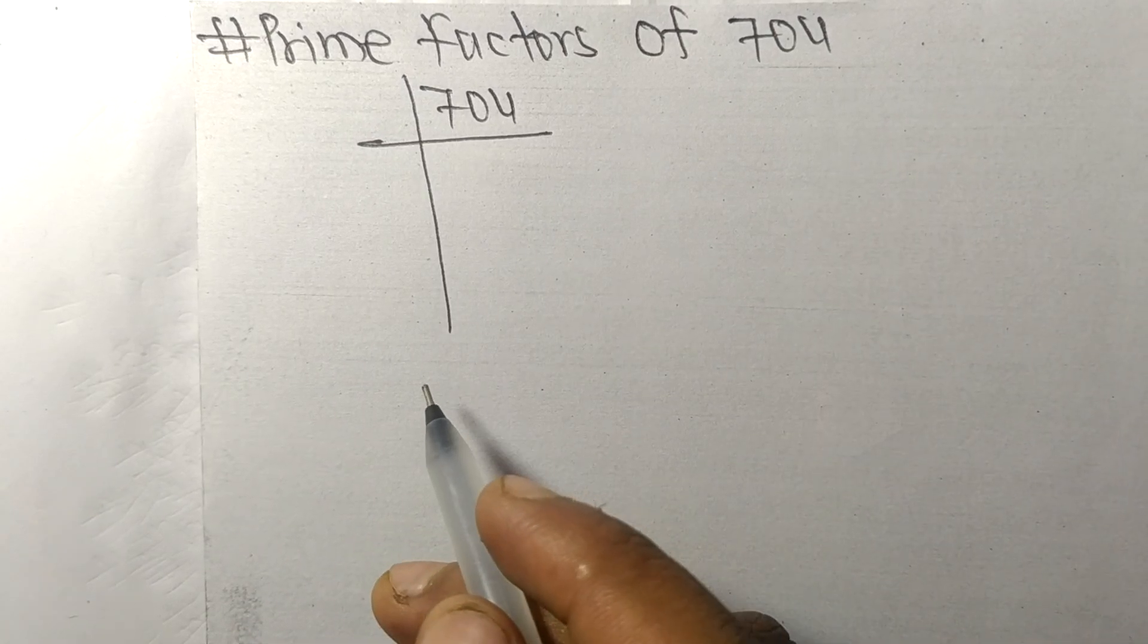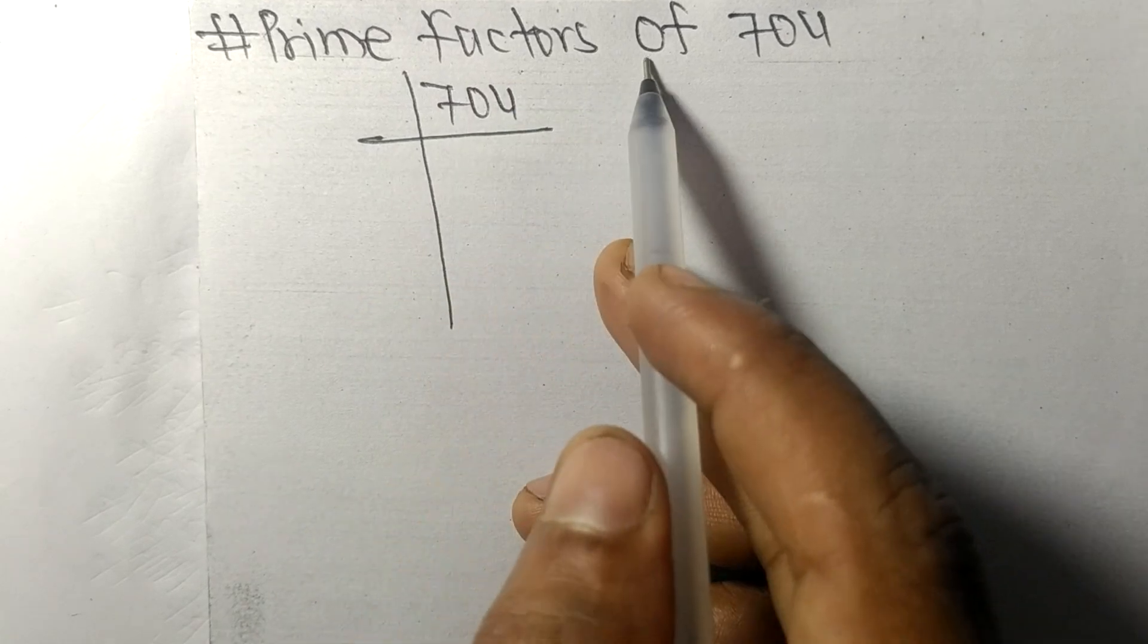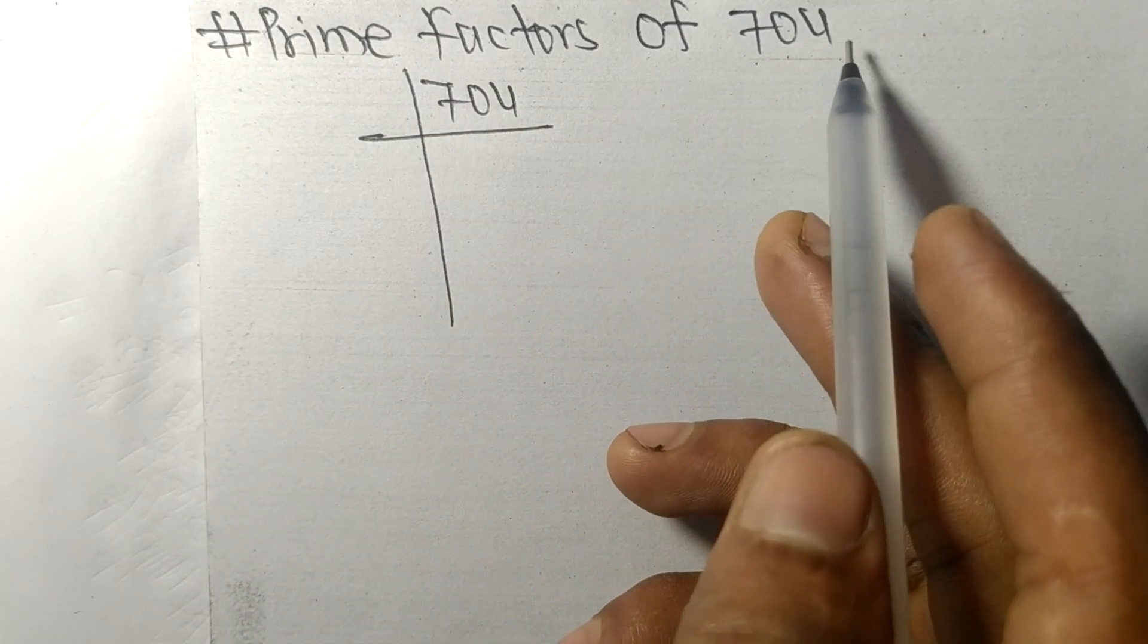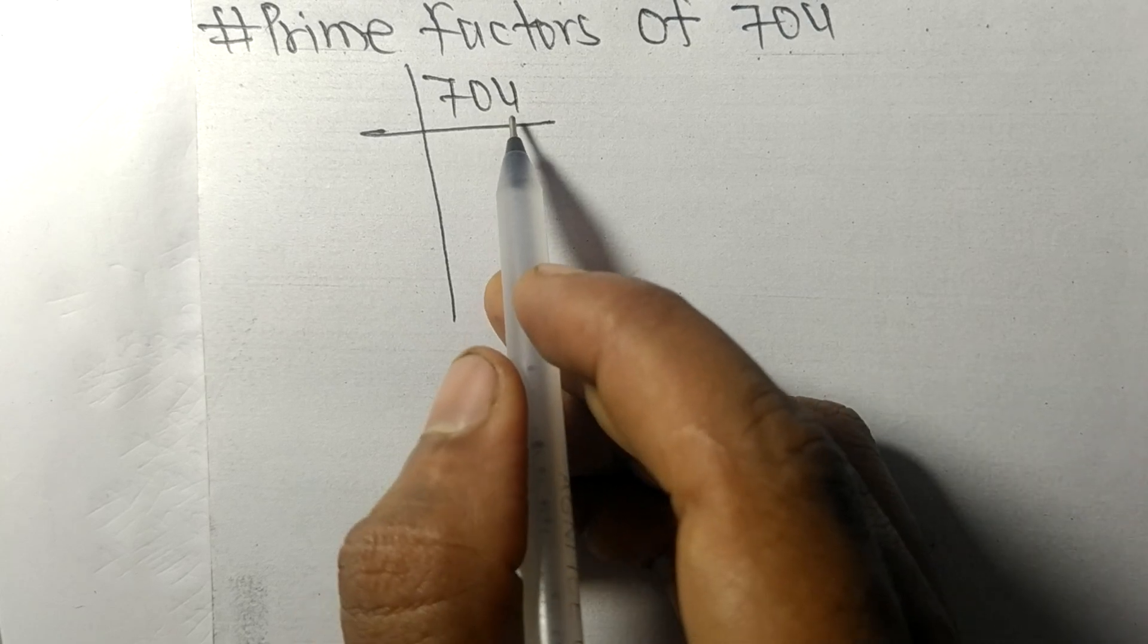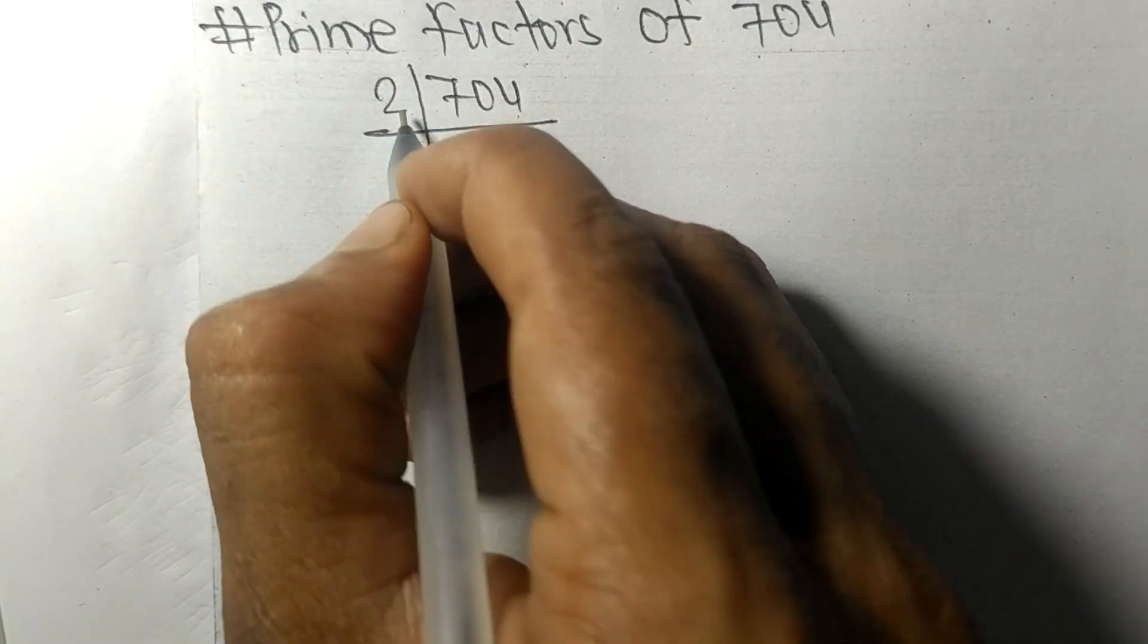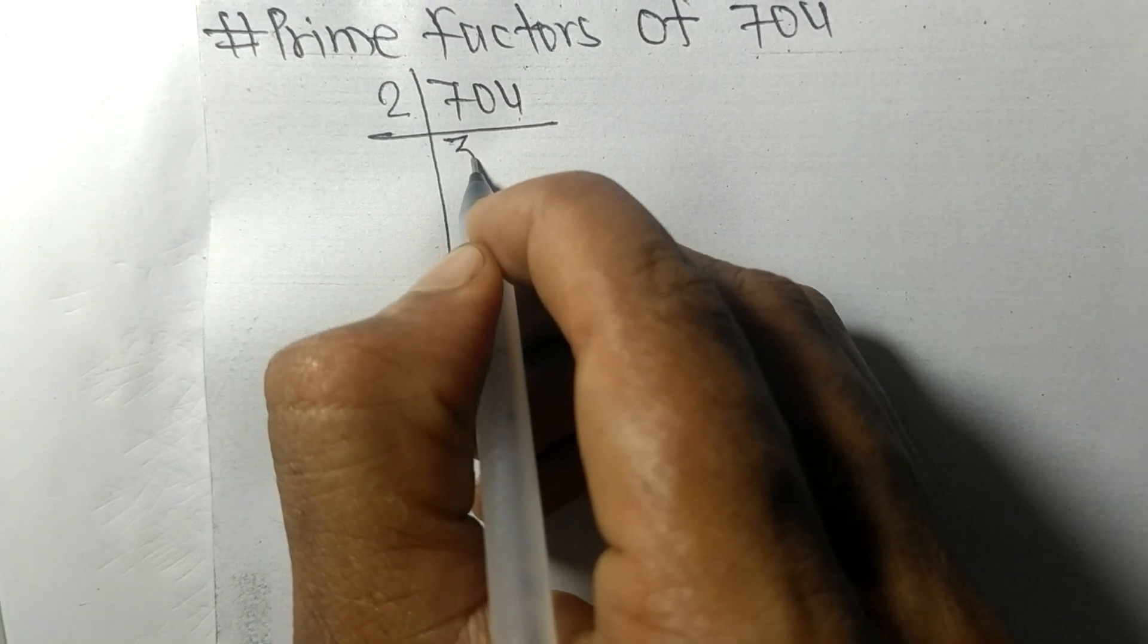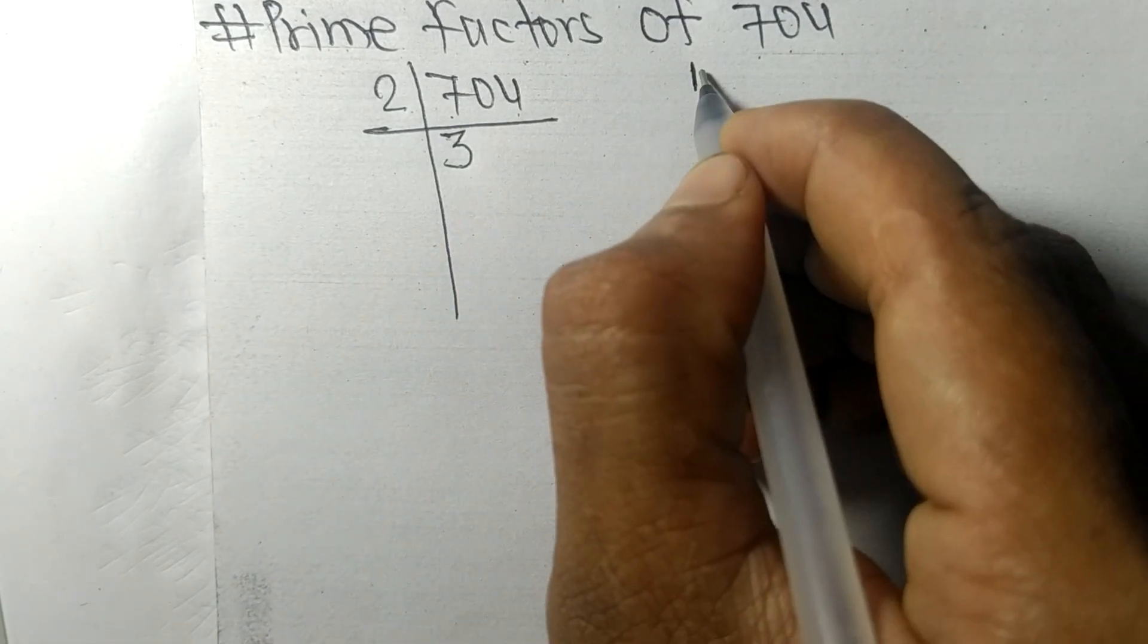So today in this video we shall learn to find the prime factors of 704. At last it contains even number 4, so these whole numbers are divisible by 2. 2 times 3 mean 6, remainder 1 and 0. 10, 2 times 5 mean 10, and 2 times 2 mean 4.